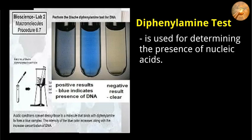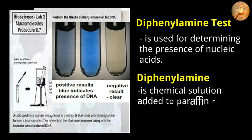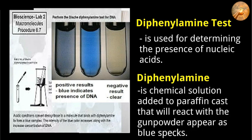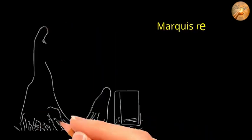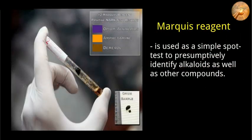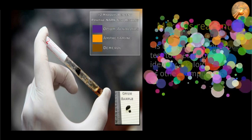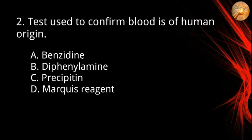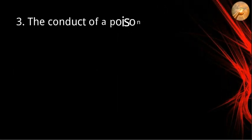Negative results in the diphenylamine test indicate a clear solution. Diphenylamine is also a chemical solution added to a paraffin cast that reacts with gunpowder, appearing as blue specks. The Marquis reagent is used as a simple spot test to presumptively identify alkaloids and other compounds; it is composed of a mixture of formaldehyde and concentrated sulfuric acid dripped onto the substance being tested. The correct answer for number two is letter C, precipitin.